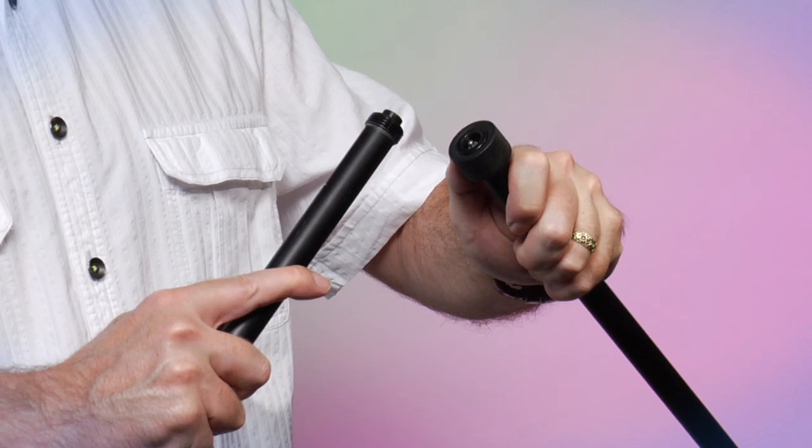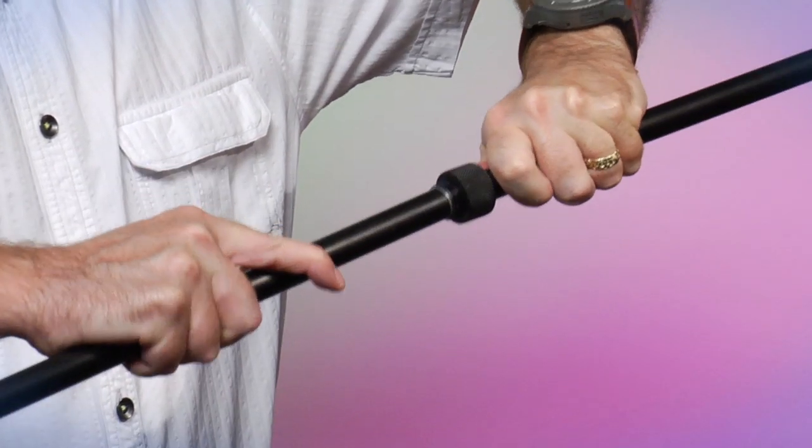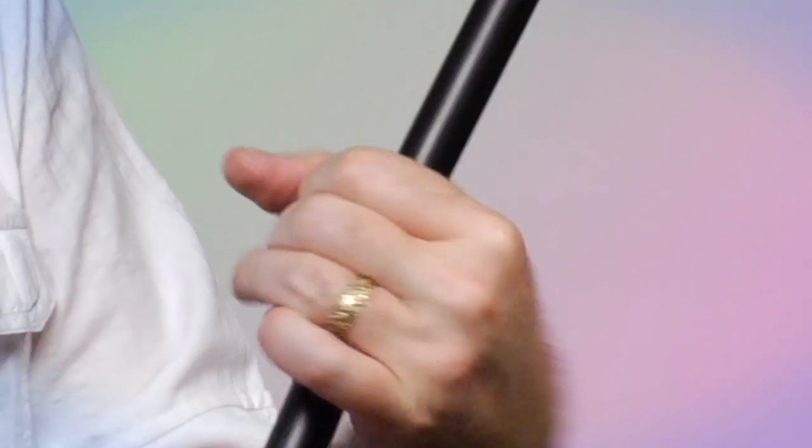Start by connecting the two halves of the poles while maintaining alignment with the pin. Tighten the knurled nut.